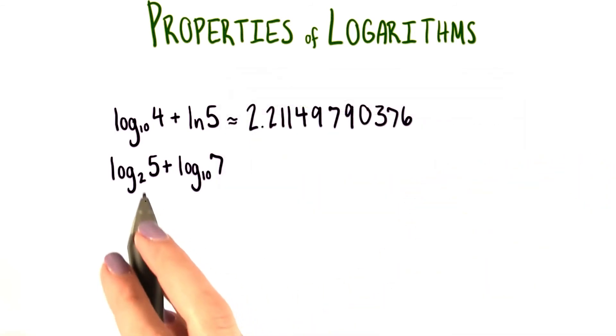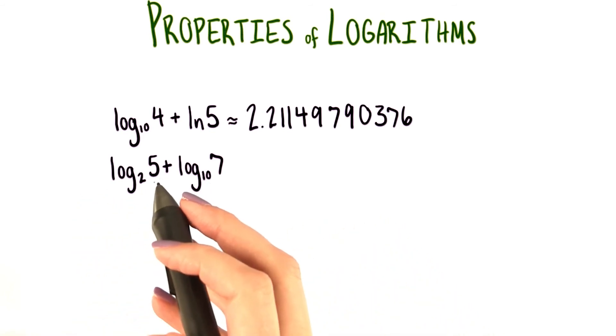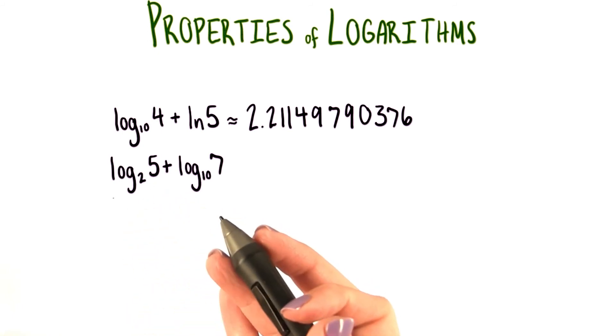There's something called changing bases that we can do. What this means is that we'll convert log base 2 of 5 to something with a different base that we can evaluate using a calculator.